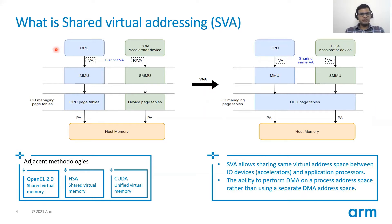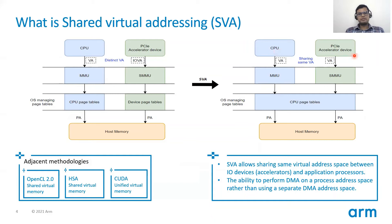In the picture above, we see on the left that the CPU and PCIe accelerator device have their own view of virtual address space. The CPU is serviced by the MMU which provides VA to PA translation, while the SMMU provides IO VA to PA translation for any PCIe IO device. Now when implementing SVA, the CPU and the accelerator device will have the same virtual address space view. They can share the same virtual address space pointer and both MMU and SMMU can walk the same set of CPU page tables.